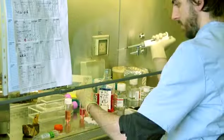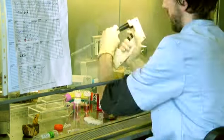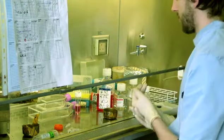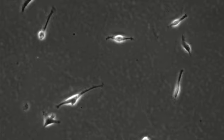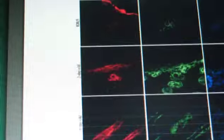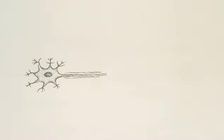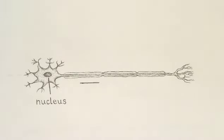When we're trying to turn stem cells into particular cell types, one problem is knowing when we've actually been successful in making the type we're interested in. You might think that you can identify just by looking. It's true that different cell types do have characteristic shapes—so neurons will be very long and thin, for example. Some cell types you really can't identify by eye.